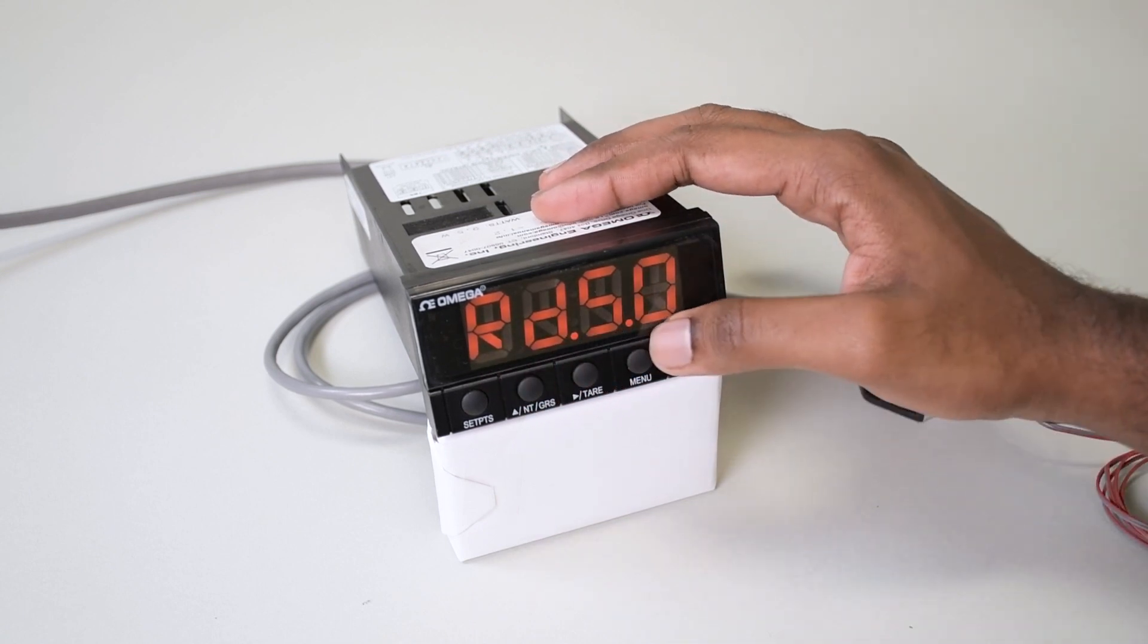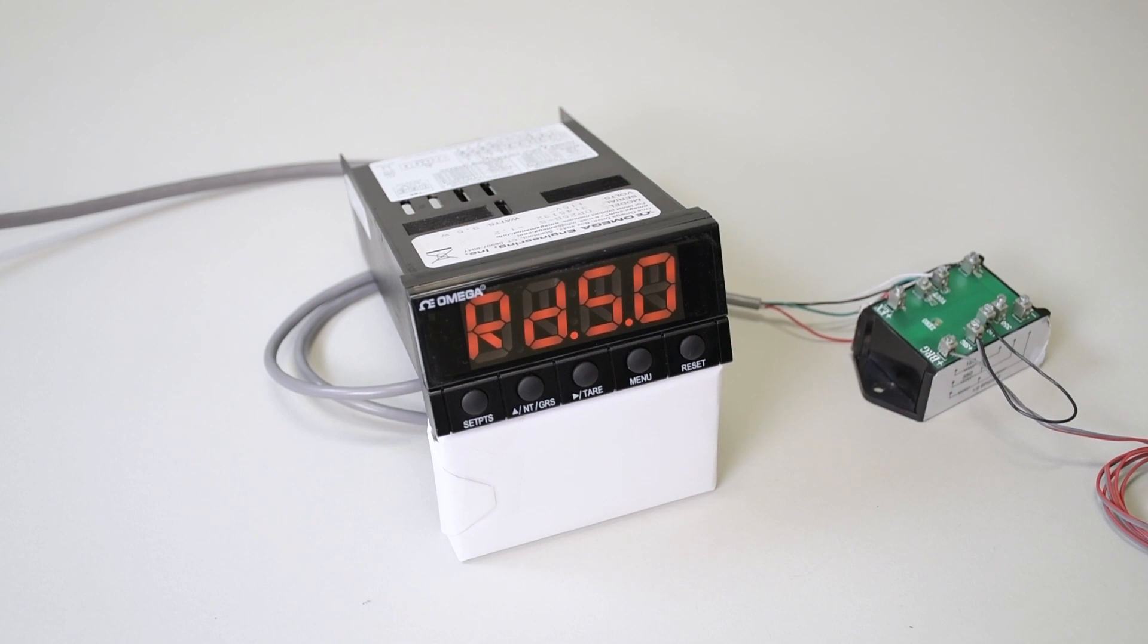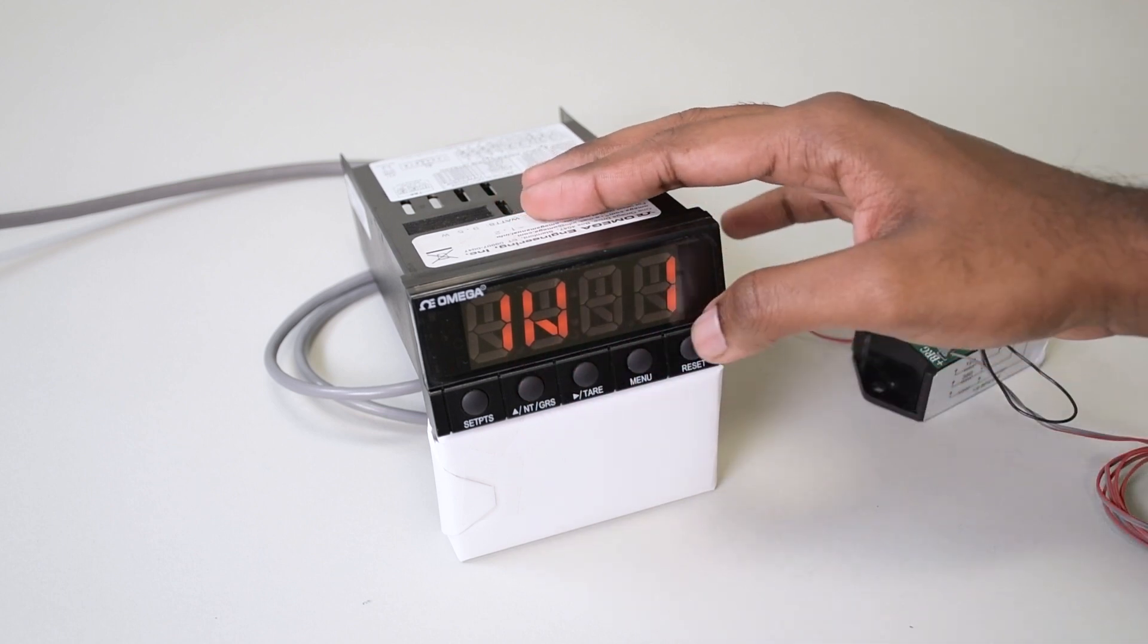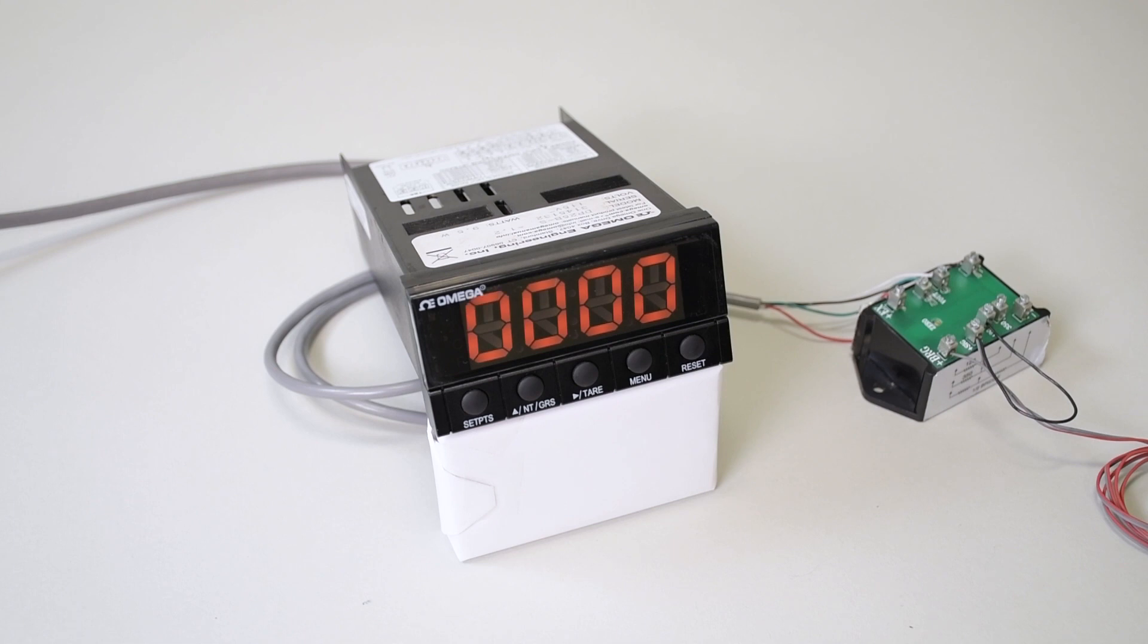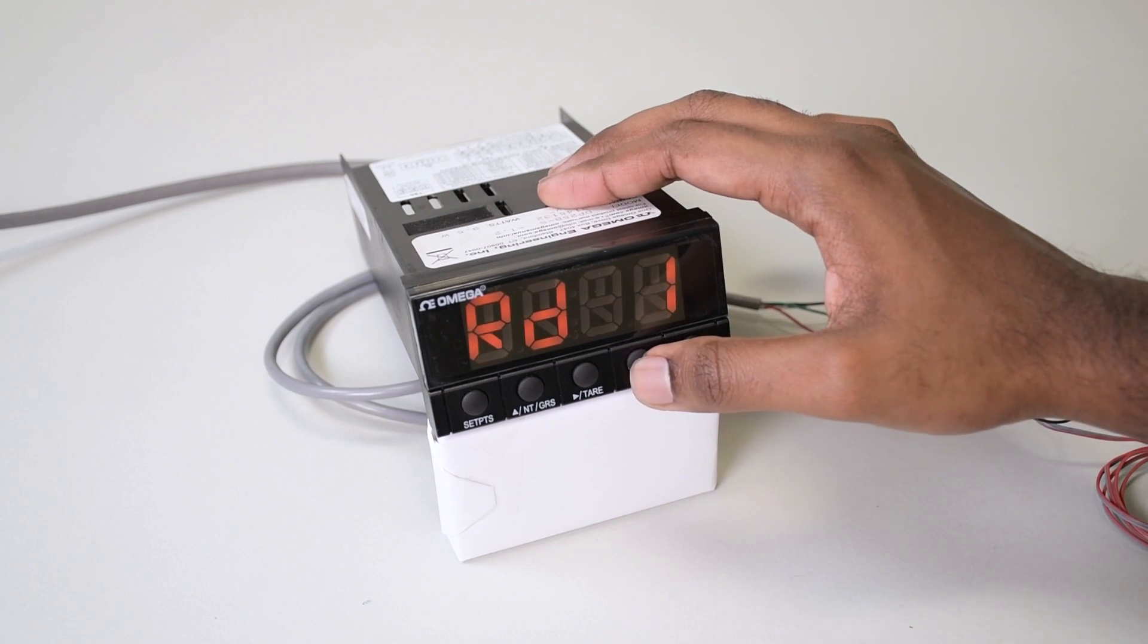You'll see RDSO. RDSO stands for reading scale and offset. Press the tare button once. You'll see IN1, which is input 1. Press tare button once. You should see all zeros. IN1 corresponds to the input from the BCM or the Wheatstone network when there's no strain being applied. Obviously we want to be reading 0 millivolts. Press menu button to save it.